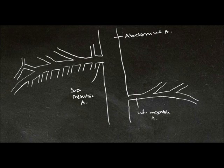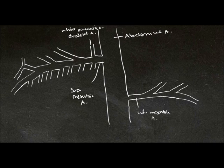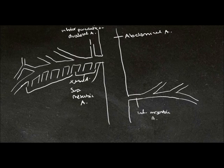Coming off this superior mesenteric artery, we have our inferior pancreaticoduodenal artery, and this is supplying the pancreas and the duodenum. Then we have our jejunal arteries and our ileal arteries, supplying the jejunum and the ileum.